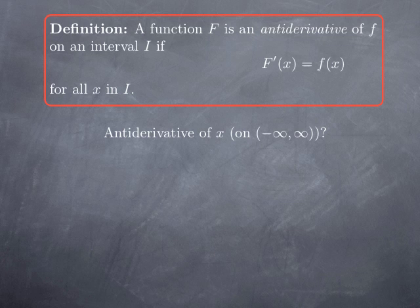First derivative, second derivative, and so on. In this case, given a function, we're looking for another function whose derivative is that given function. You may ask why we care to find that. In many situations, it is useful to find antiderivatives of a given function. For instance, to know the position of a particle at a given time knowing its velocity — if you have the velocity, it is the rate of change of the position, so finding an antiderivative corresponds to finding the position function.